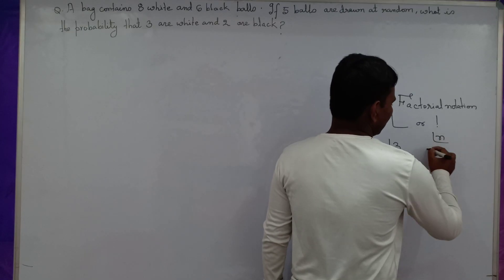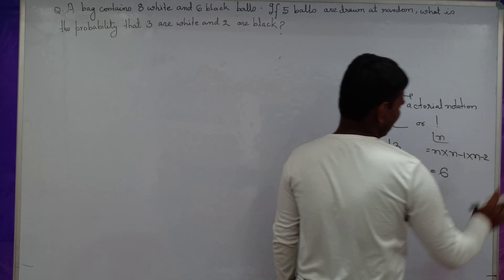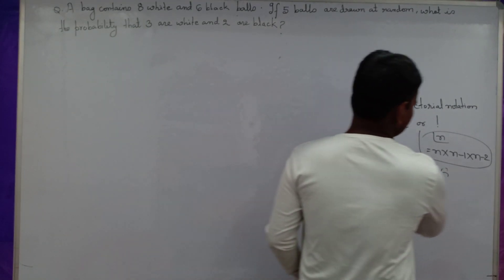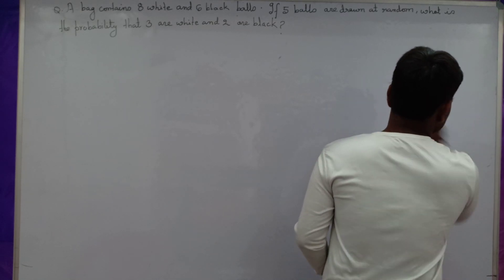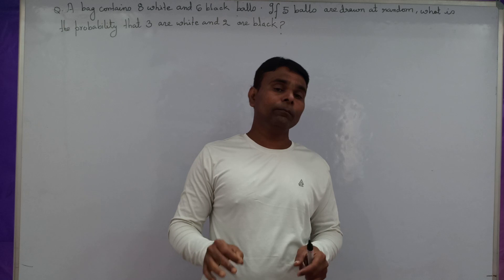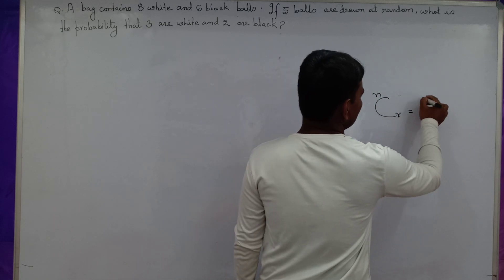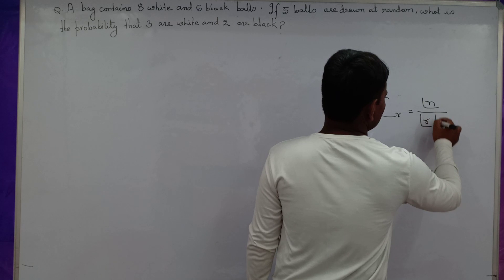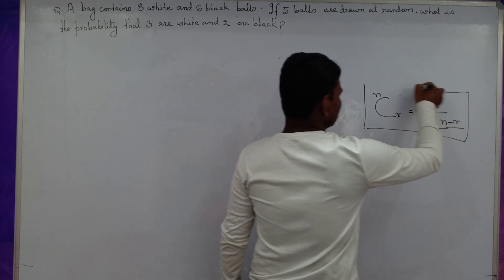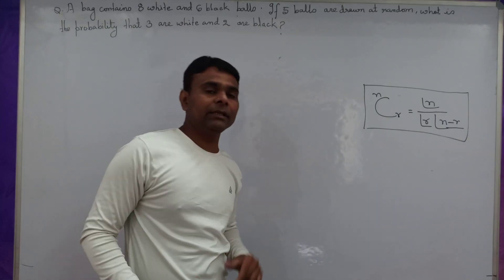If factorial n equals n × (n−1) × (n−2) and so on — that is the formula for factorial n. Now, combination: the number of combinations of n distinct objects taken r at a time is given by C(n, r) = n! / (r! × (n−r)!). We should keep this formula in mind for solving probability problems.